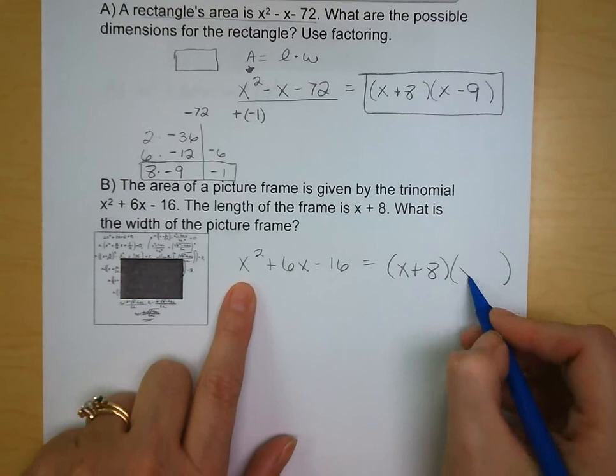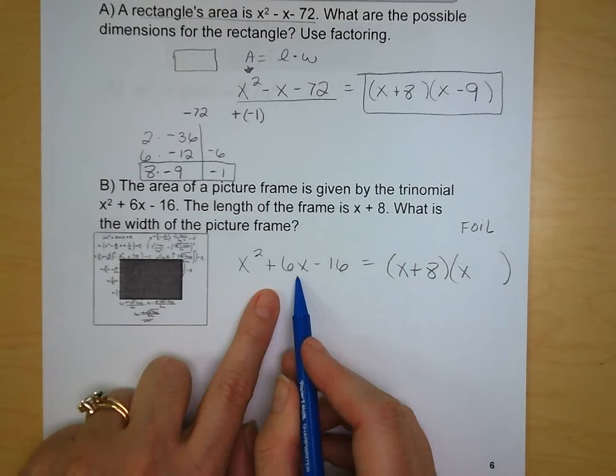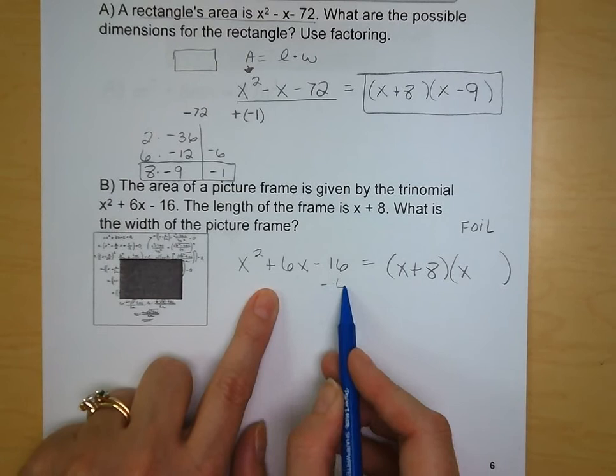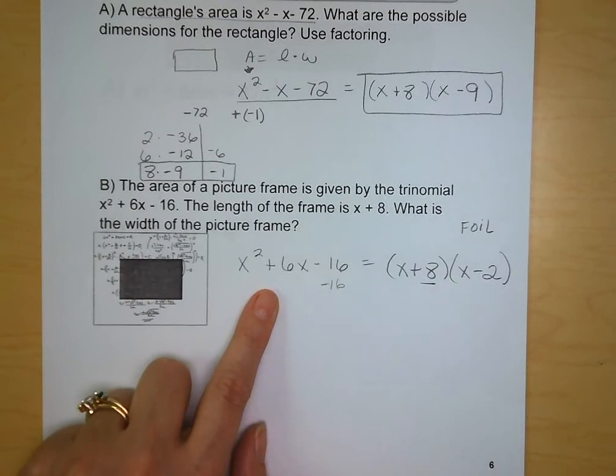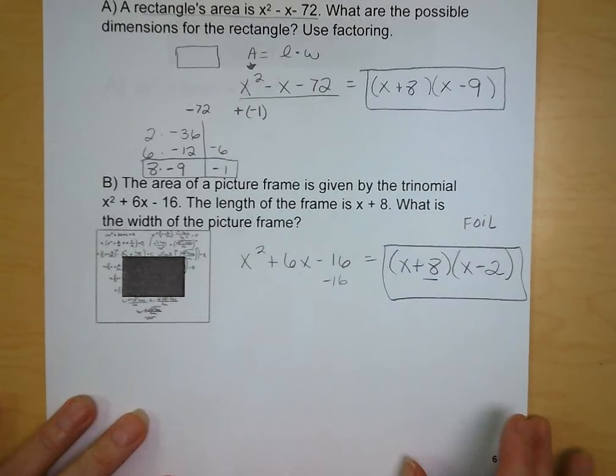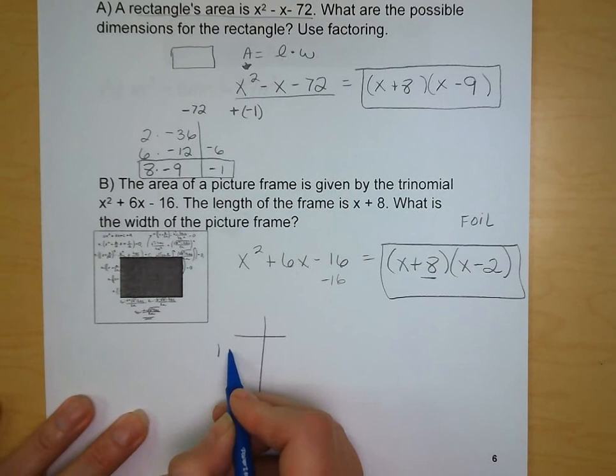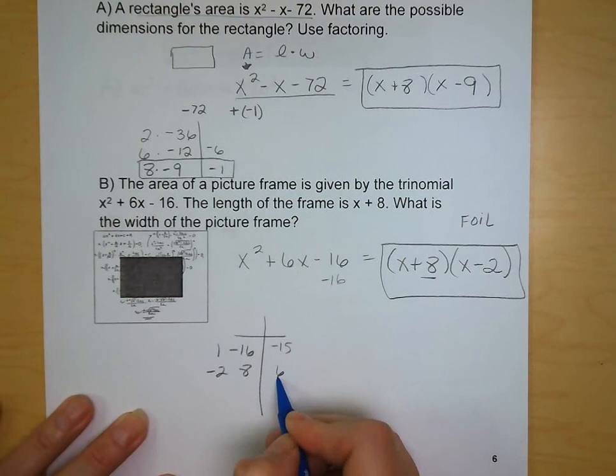Well, we can do this pretty intuitively. If we know that our last terms to multiply are going to be 8 and something, and they're going to give us -16, well, what can we multiply 8 by to get -16? It's -2. We could have also gone the route of finding our factors of -16, which would be 1 and -16, 2 and 8. There we go. Alright.